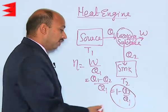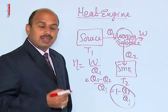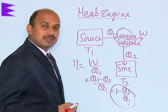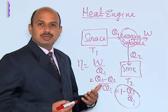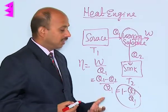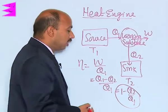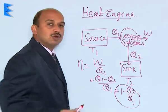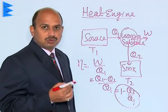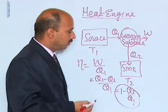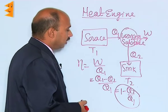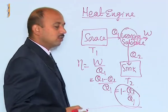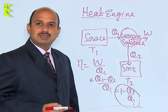If Q2 is equal to 0, then efficiency will be equal to 100 percent. Efficiency is measured as a percentage and has no unit. So if Q2 equals 0, the efficiency of the engine would be 100 percent, which is not actually possible for any engine. This is about heat engines and the calculation of their efficiency.